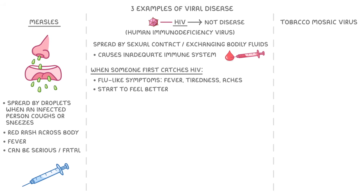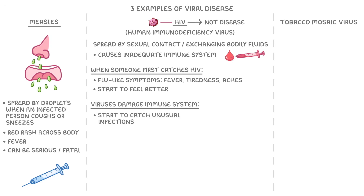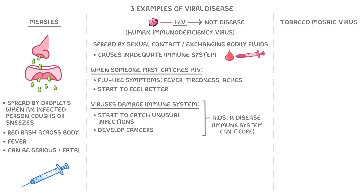But then they'll start to feel better, and think that everything's fine. However, inside their body, the viruses are doing more and more damage to their immune system. And at some point, their immune system becomes so weak that they start to catch unusual infections, and sometimes even get cancers. At this point, we say that the person has developed AIDS, which is classed as a disease or syndrome, in which the person's immune system can't cope anymore.